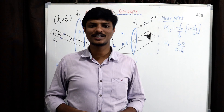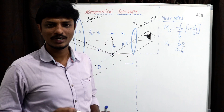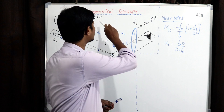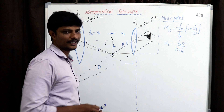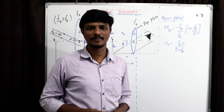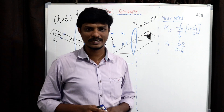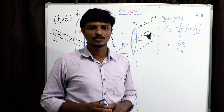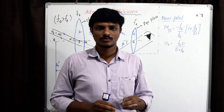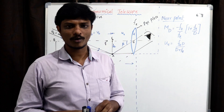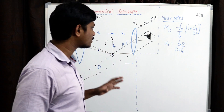Hello everyone, welcome back to my channel Physicsopedia. In the previous lecture, we discussed the descriptive part of the astronomical telescope. We saw the ray diagram and derived the formula for magnification in two cases: one for near point and one for far point. Today's lecture, we are going to discuss problem solving. Astronomical telescope is one of the important topics in solving problems, especially from an objective point of view.